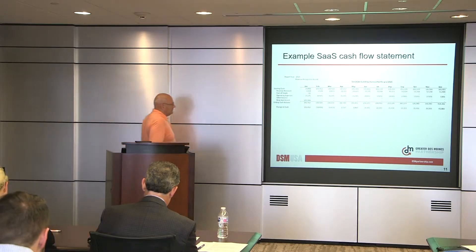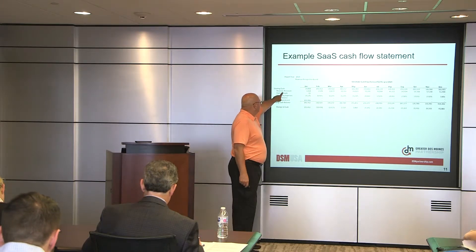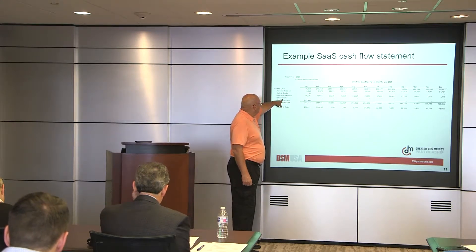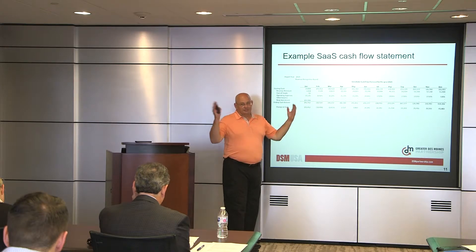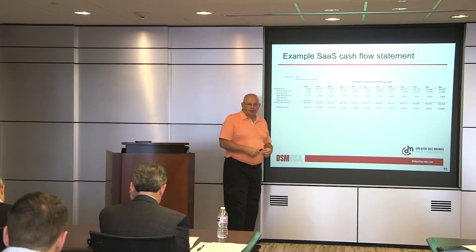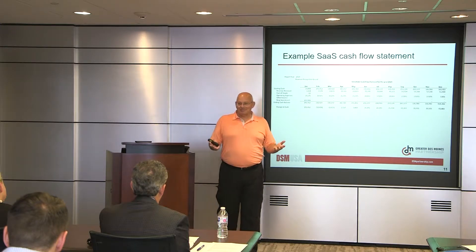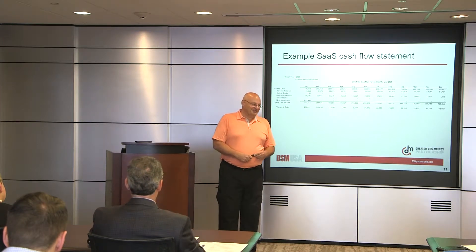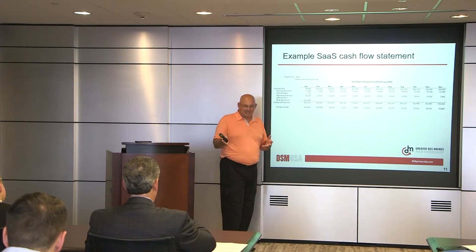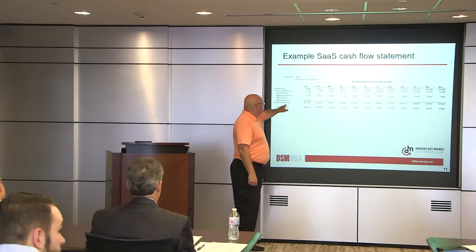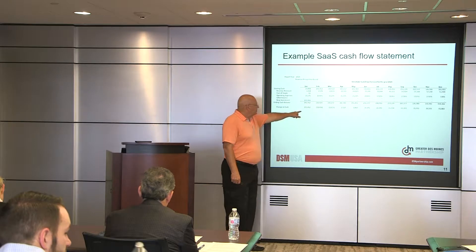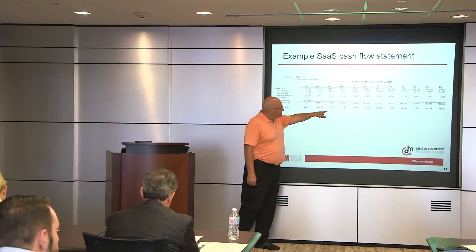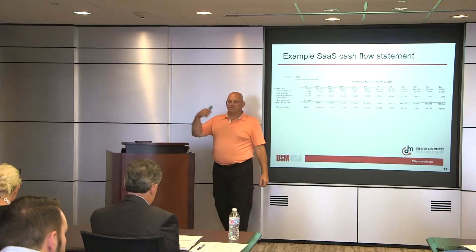Here's an example of what a cash flow statement looks like. Going down the left side: how much did I start with, how much revenue came in, what was my cost of selling, what operating expenses did I have, any other income — like winning a business plan prize. By the way, if you win the Papa John's prize for $40,000, it's revenue and you pay taxes on it. Any new investments, then an ending cash balance. When the change in cash is mostly positive, that's a great place to be.